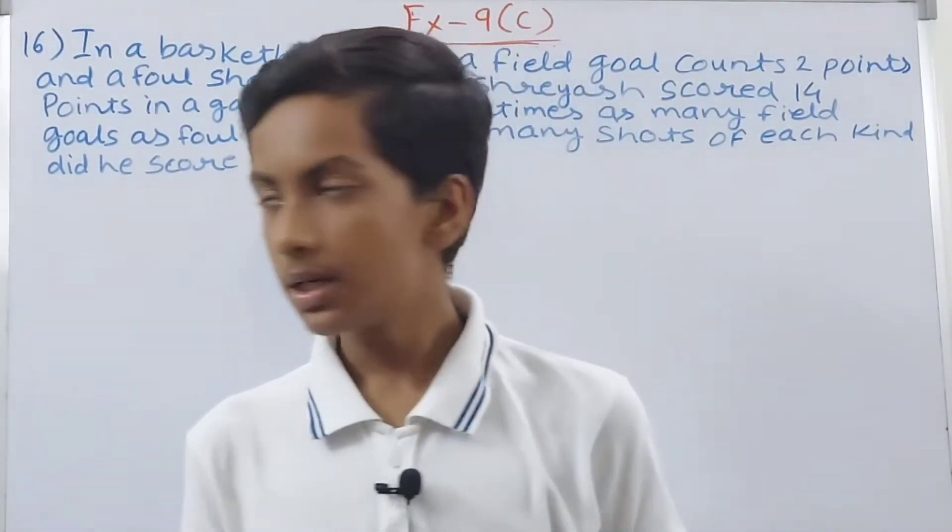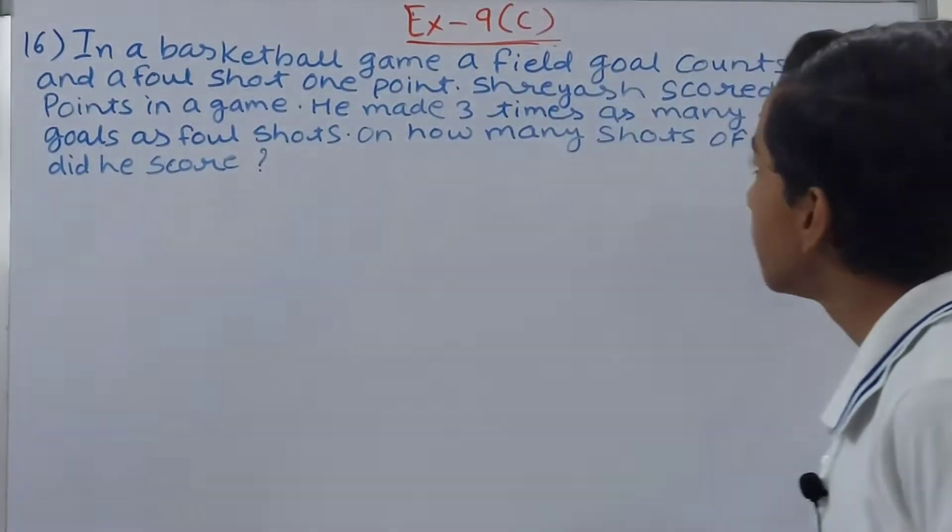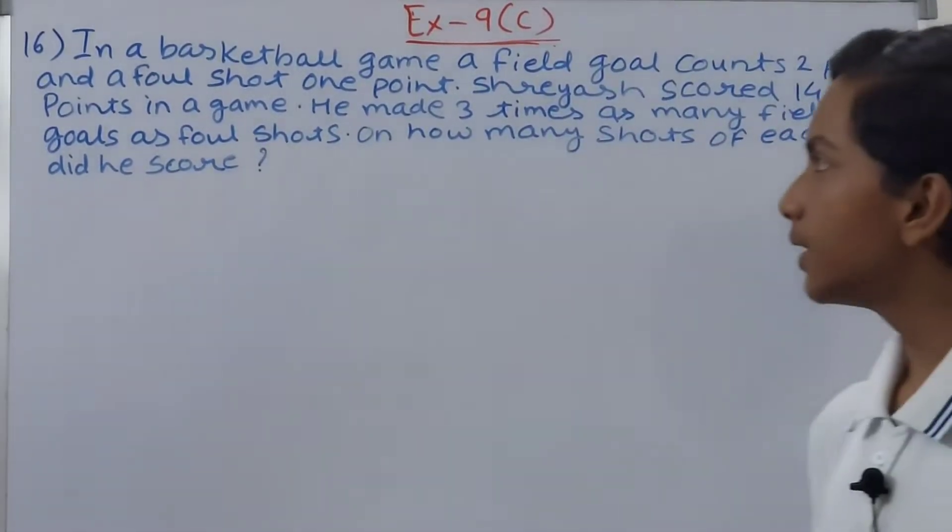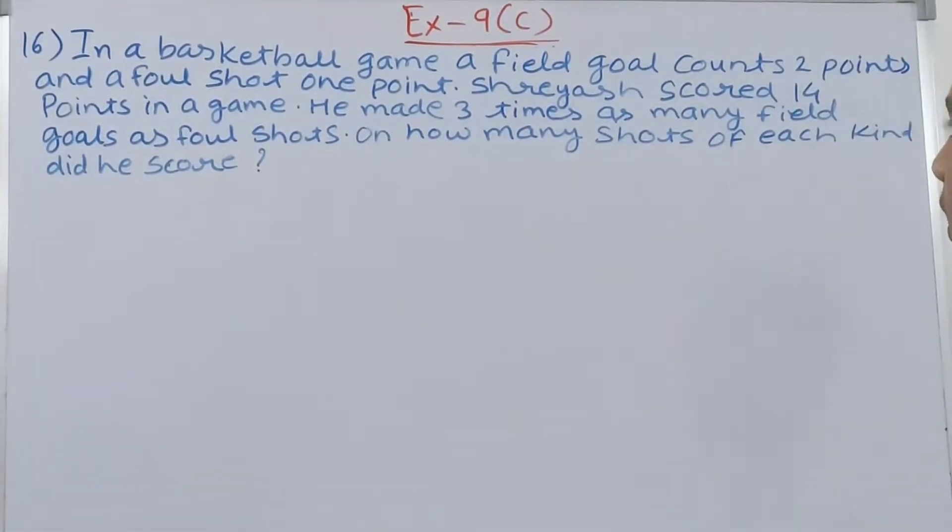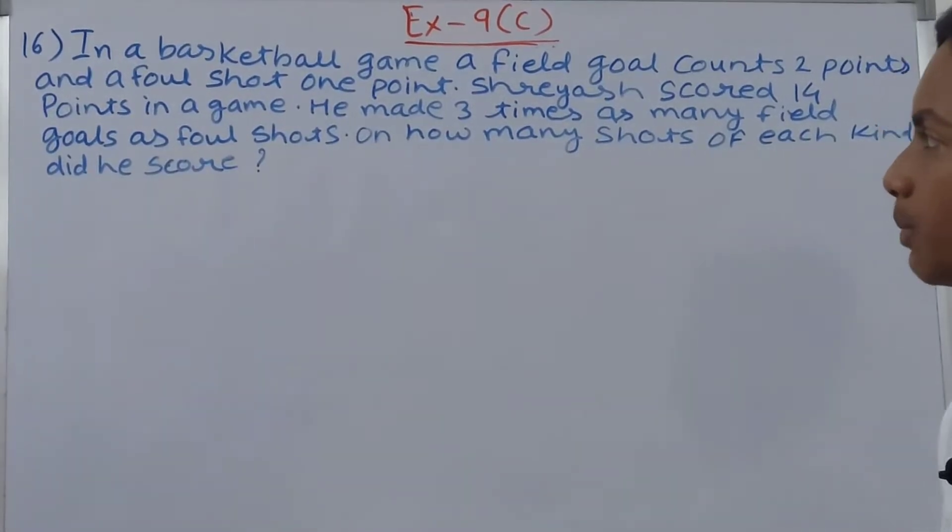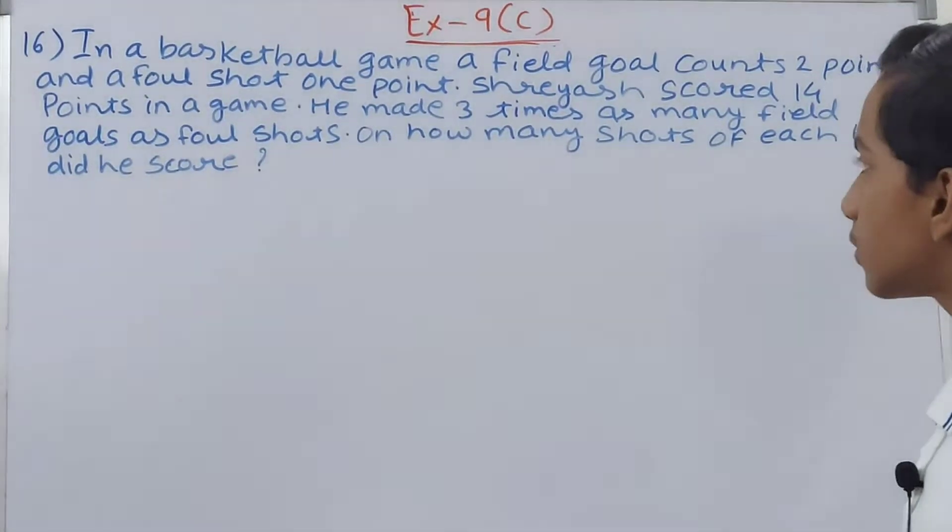The problem states: In a basketball game, a field goal counts 2 points and a foul shot counts 1 point. Shreyas scored 14 points in a game. He made three times as many field goals as foul shots. On how many shots of each kind did he score?